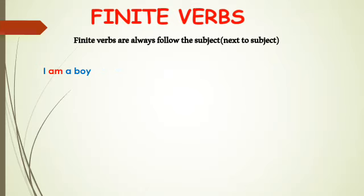Finite verbs always follow the subject and are next to the subject in a sentence. For example: 'I am a boy' — 'am' is the finite verb. 'She is a girl' — singular 'she' takes 'is'. Both are present tense but the verb changes. 'They are students' — plural takes 'are'. Even 'Raju is a student' — 'is' changes based on the subject.